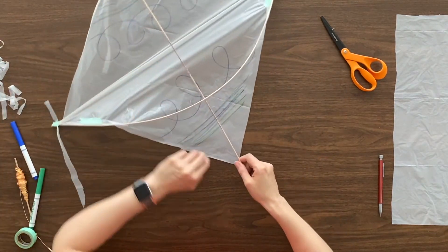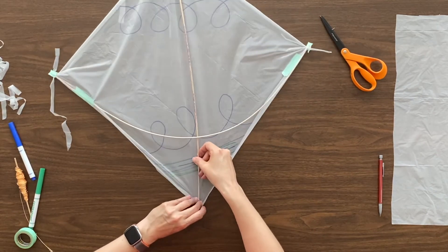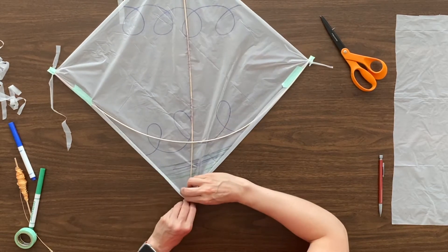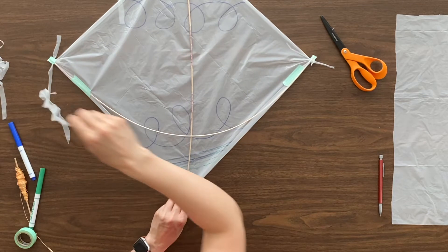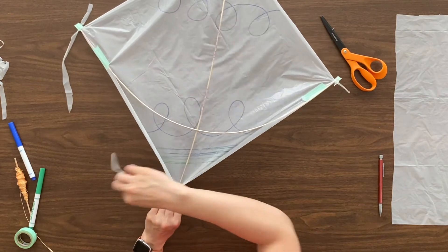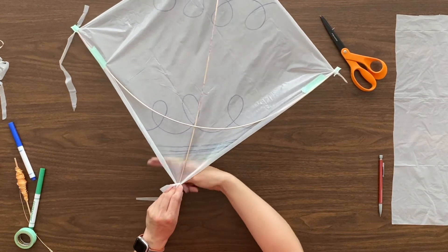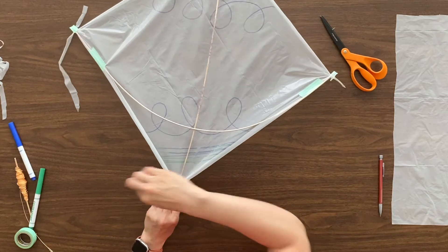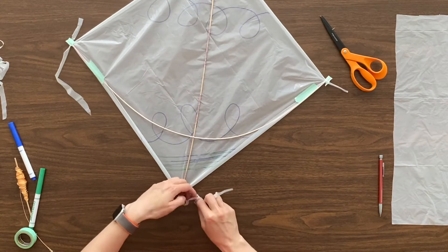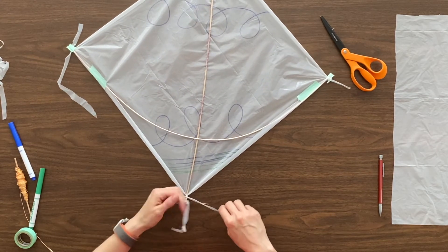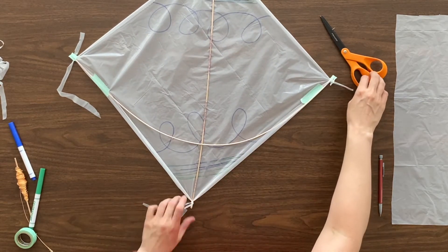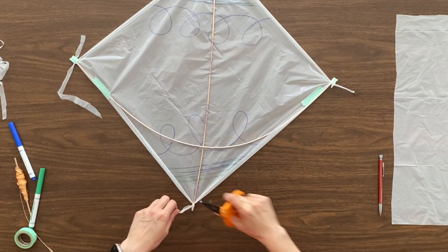Now I'm going to turn this around. I'm going to do the same thing to the top of the kite. Fold that plastic over just a little. I'm going to take a plastic strip, wrap it around, tie it in a knot. I'm going to trim this on the top.